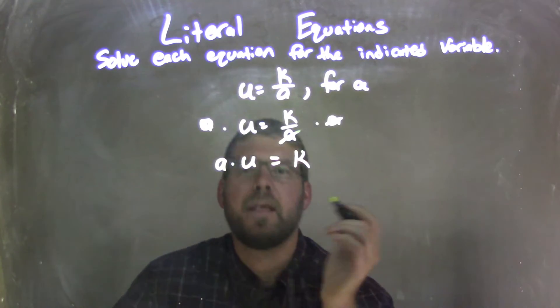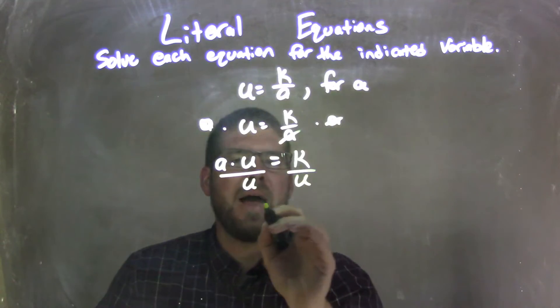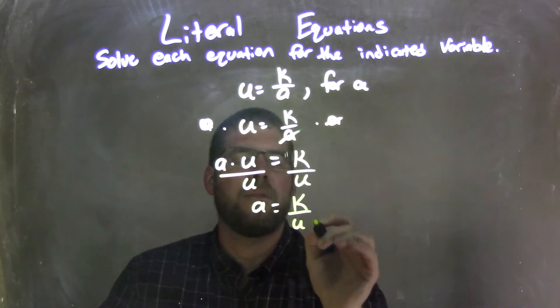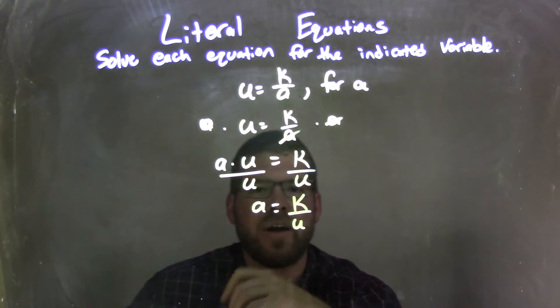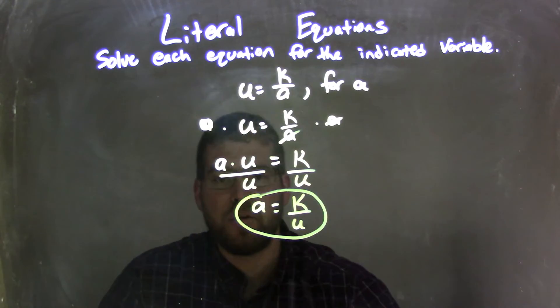But now it's just one more step, right? I can divide by u to both sides, and that leaves me with an a on the left by itself and a k over u on the right. And a is already isolated now, and it's on the left-hand side, and it already looks nice and neat. And so my final answer here is just a equals k over u.